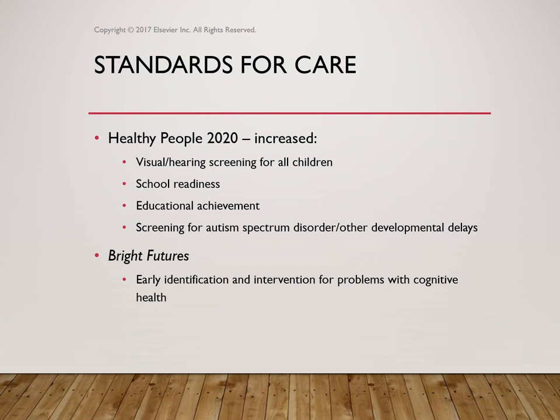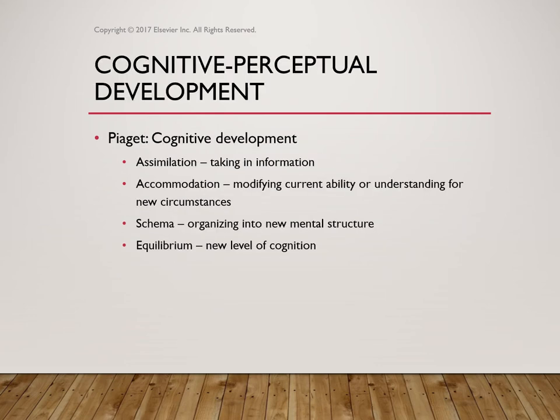When we look at standards of care, we look at Healthy People 2020. There has been concern due to disparities of health. We look at vision and hearing screenings, school readiness for children, educational achievement, screening for autism, and other developmental delays. Bright Futures provides early identification and intervention for problems with cognitive health. These are all screening tools that are standards of care.